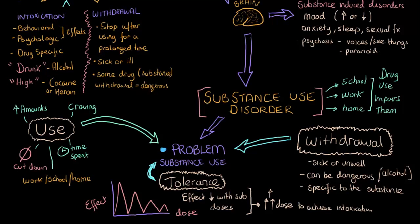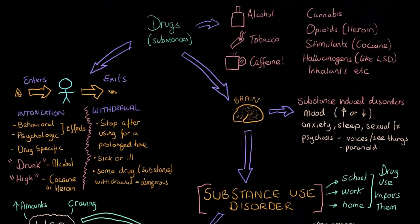Having just a couple of these indicators — such as craving, withdrawal, using increasing amounts, or not being able to cut down — is enough to diagnose a substance use disorder. There are different severities: mild, moderate, and severe. One caveat is that with caffeine, of all the drugs mentioned, we cannot actually develop a substance use disorder according to the current criteria — that may be an arbitrary thing, but it's worth knowing.